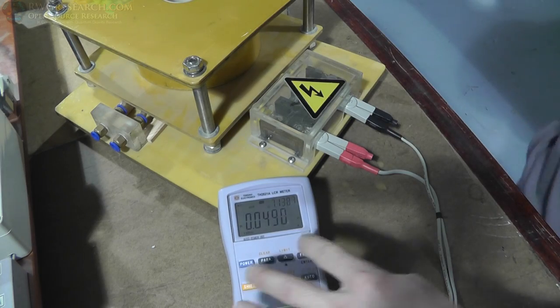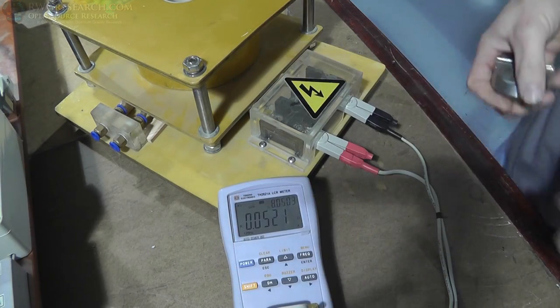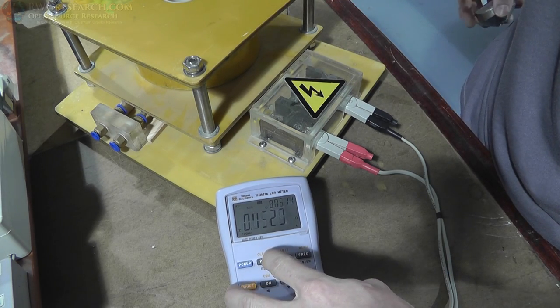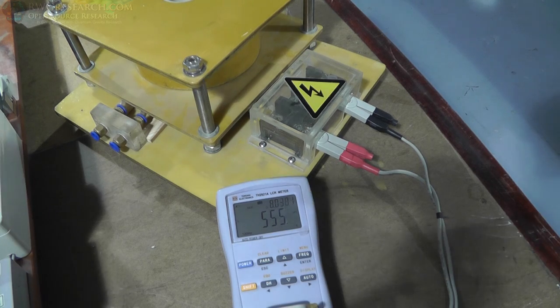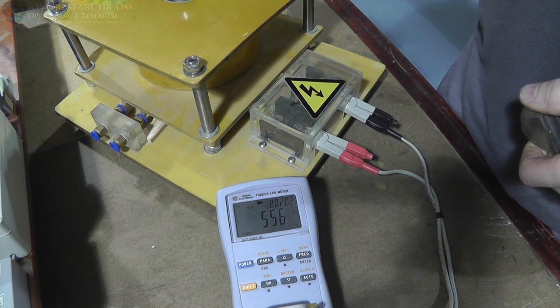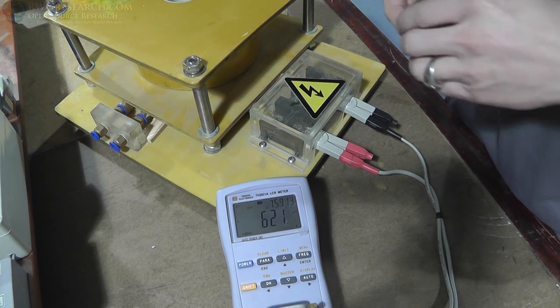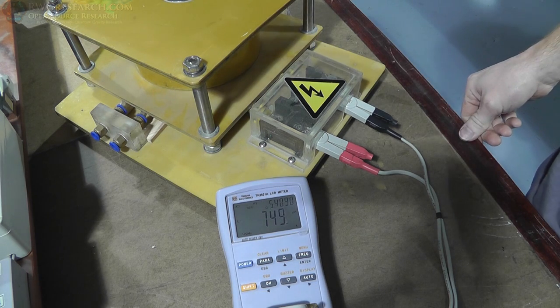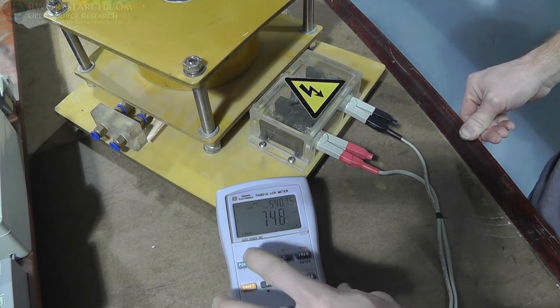So just for fun, let's go ahead and drop in these cores just to see what the inductance value is. So it's at 550 micro henry. So if I put in the cores, there's about 748 micro henry.